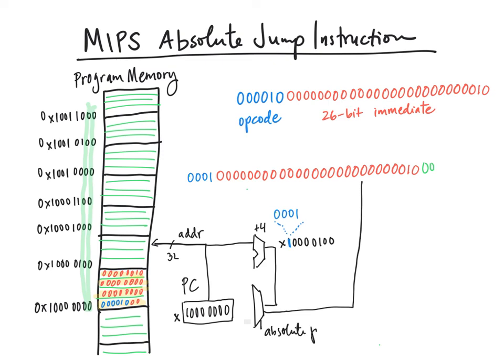then instead of updating the PC with PC plus 4, I want to update it with the address embedded in this absolute jump instruction.